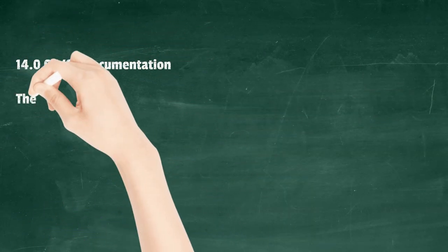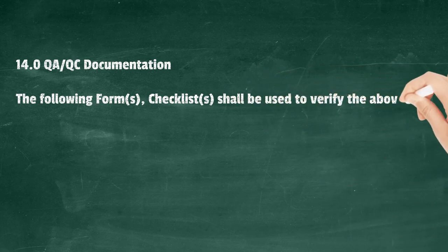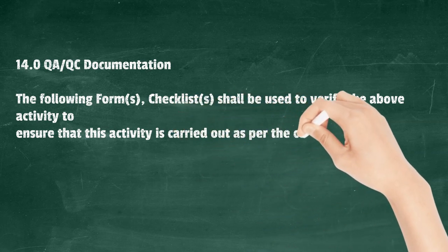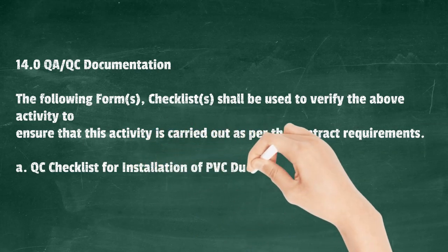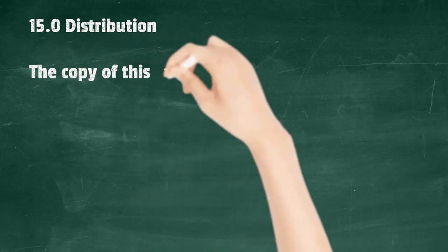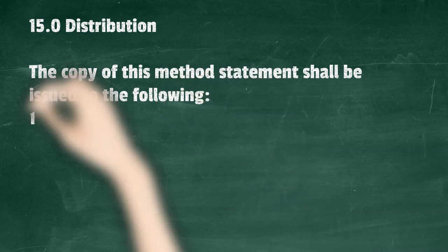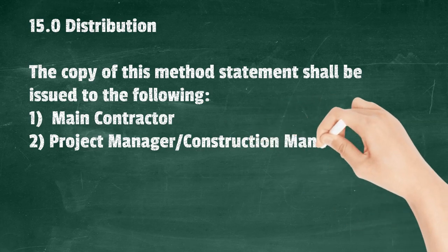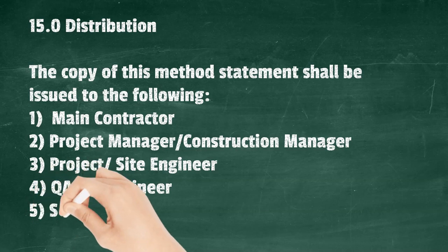QA/QC Documentation: The following forms and checklists shall be used to verify the above activity to ensure it is carried out as per contract requirements: QC checklist for installation of PVC duct pipes. Distribution: A copy of this method statement shall be issued to the following: main contractor, project manager/construction manager, project/site engineer, QA/QC engineer, and safety engineer.